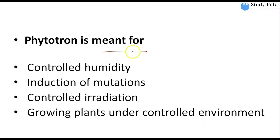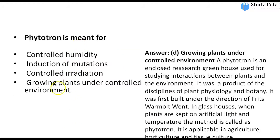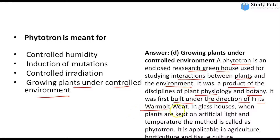Twelfth question: What does phytotron mean? Options: controlling humidity, inducing mutation, controlling irradiation, or growing plants in a controlled environment. Phytotron means growing plants in a controlled environment. It is a type of greenhouse used to study the interaction between plants and their environment.